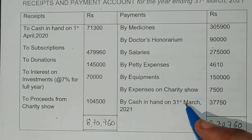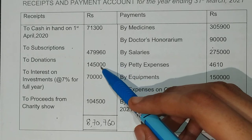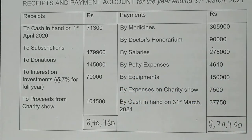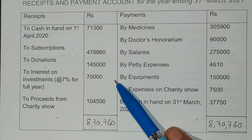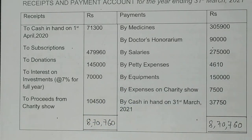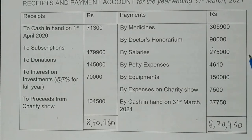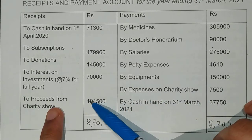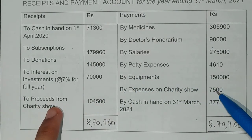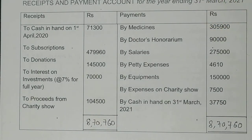Opening balance cash and closing balance cash — which will not be included in income and expenditure. Subscription, donations are given. You have invested and received interest of $70,000. Charity show proceeds, medicines, doctor's honorarium — all included. Salaries, petty expenses are also included. Equipment — which is a capital item — will not be included in I&E. Then charity show proceeds are related. Closing balance cash will not be included.